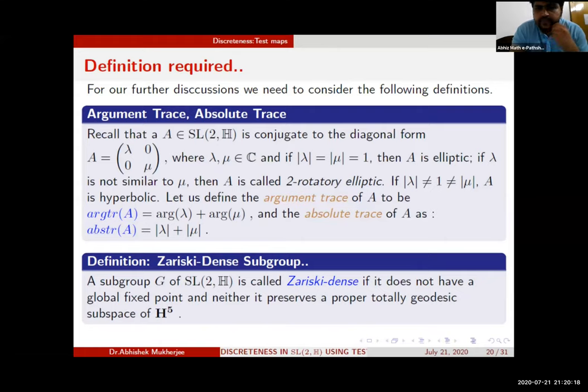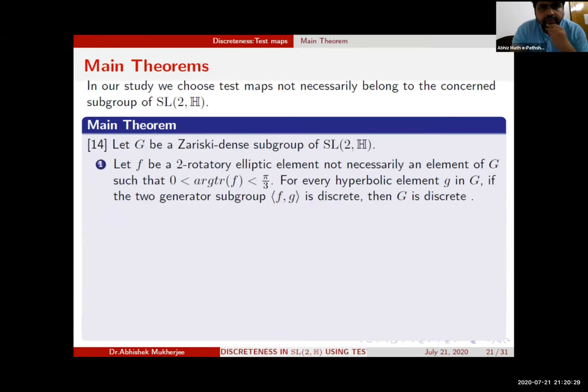The definition of Zariski-dense subgroups: a subgroup is said to be Zariski-dense if it doesn't have a global fixed point and neither does it preserve a proper totally geodesic subspace of H⁵.